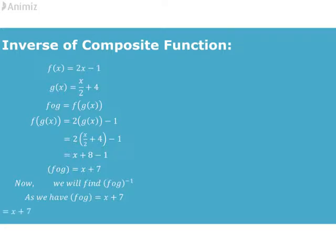As in general, we use y in place of f of x, or g of x, or f of g of x. Therefore we have y is equal to x plus 7. Solving this equation for x, we have x is equal to y minus 7.